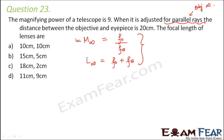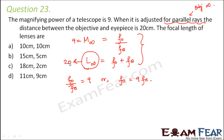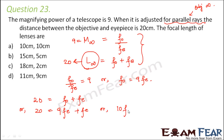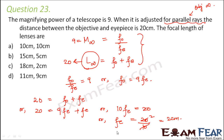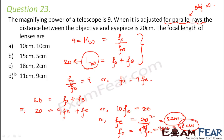Magnifying power is 9, so F0 divided by FE equals 9, meaning F0 equals 9 FE. Tube length is 20 cm, so 20 equals F0 plus FE. Substituting: 20 equals 9FE plus FE, so 10FE equals 20, giving FE equals 2 centimeters. Therefore the focal length of the objective is 9 times 2 which is 18 centimeters. The focal lengths are 2 cm and 18 cm — option C.